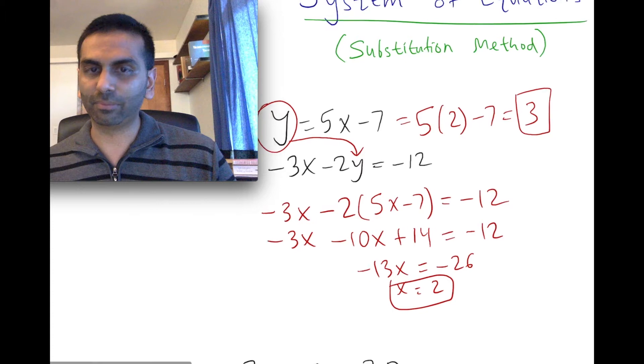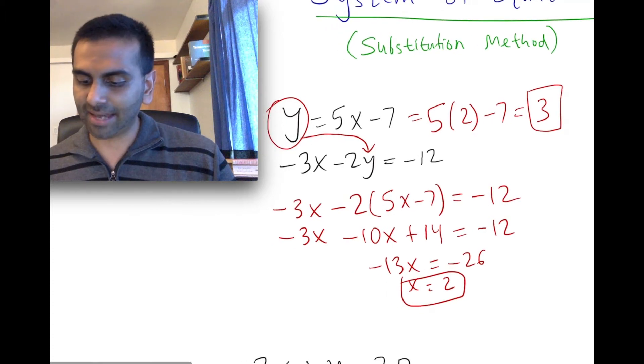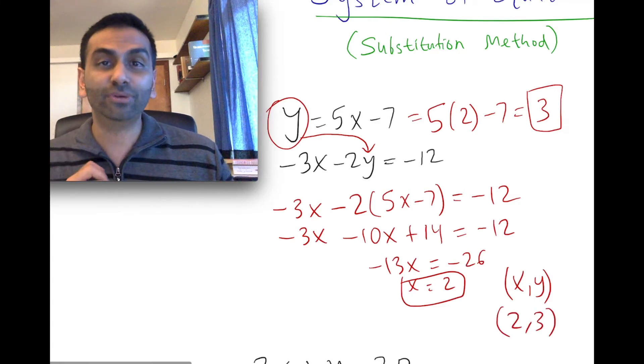Sometimes the final answer will be reported as like an x comma y, kind of like a coordinate point format. So in this case, it'll be reported as 2 comma 3.